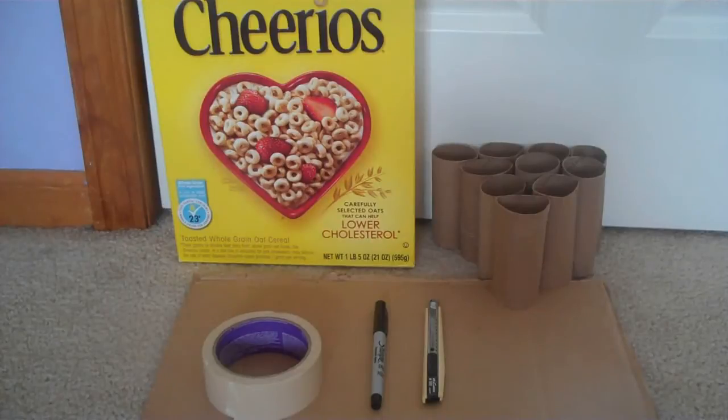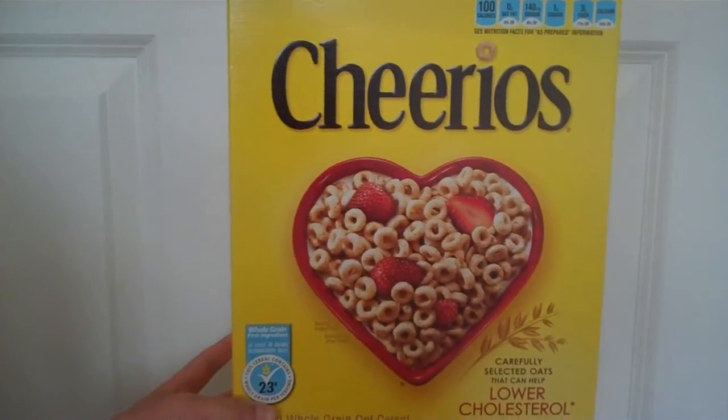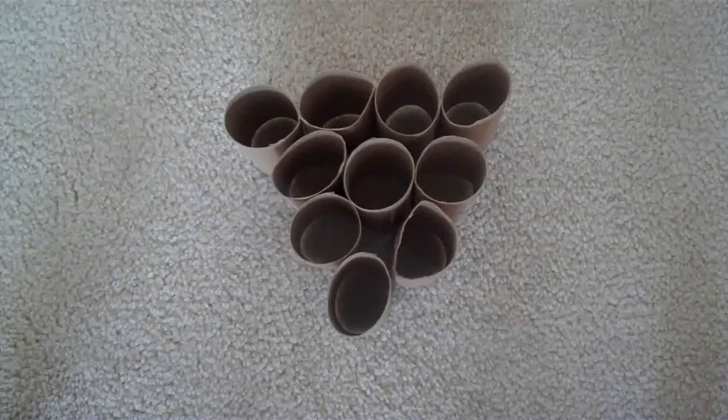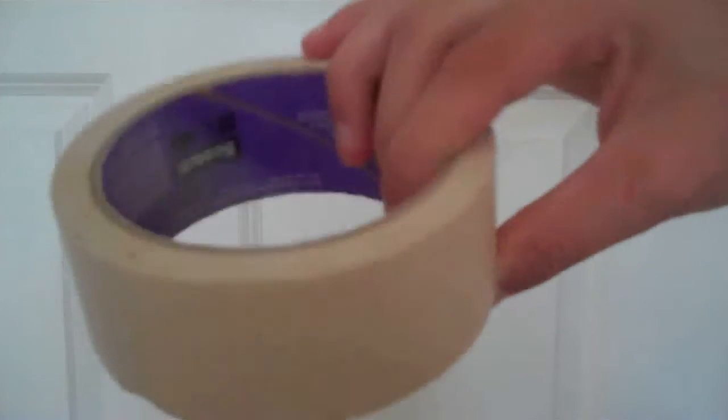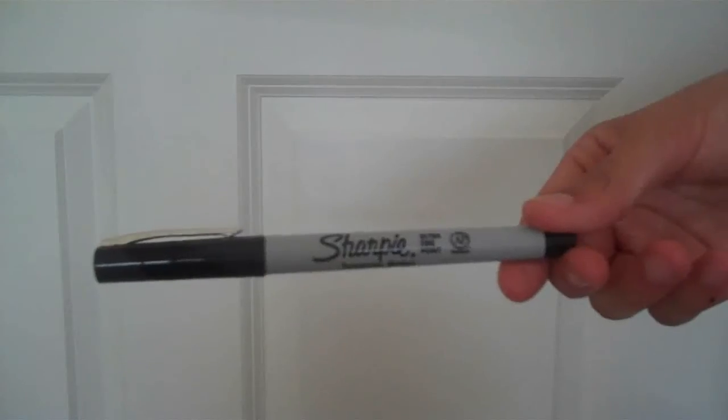So you're going to need a cereal box, as many toilet paper tubes as you want, a large piece of cardboard (we will be using the side of a box for this video), some masking tape, and a sharpie.